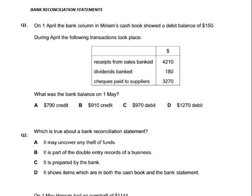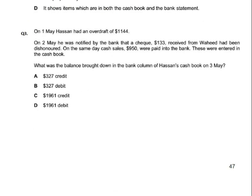Question number two ka answer ban gaya. Question number three: on first May, Hassan had an overdraft of 1144 — matlab humara bank minus mein jara hai, iska matlab humne bank ko paisse dene hain, yeh liability hai.